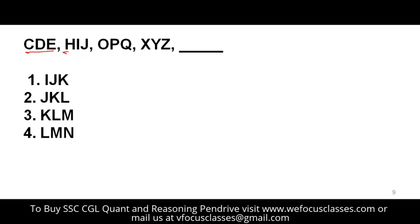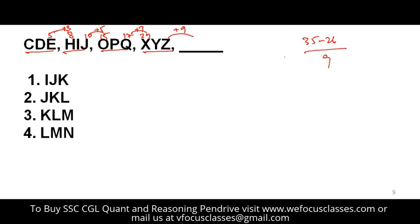The next problem: CDE, HIJ, OPQ, XYZ — consecutive letter groups. Find the gaps: E is 5, H is 8 — difference of 3. J is 10, O is 15 — difference of 5. Q is 17, X is 24 — difference of 7. The differences are 3, 5, 7, so the next difference is 9. Z is 26, plus 9 = 35; subtract 26 = 9, which is I. So the next group of consecutive letters is IJK.